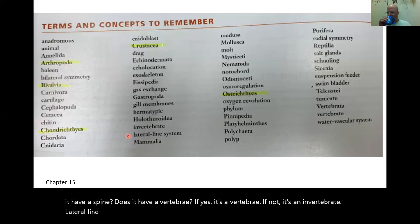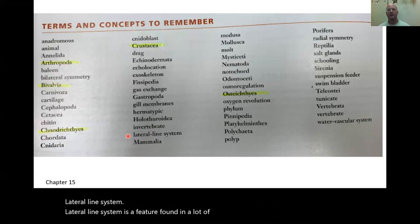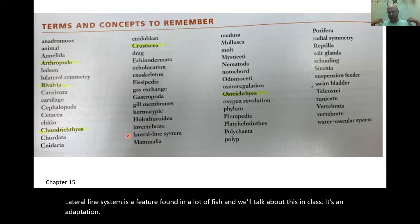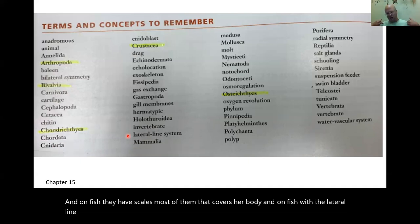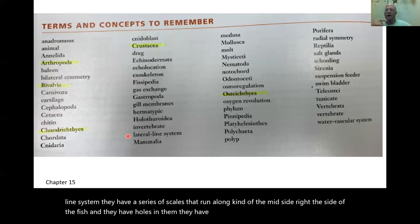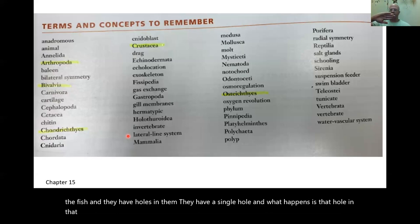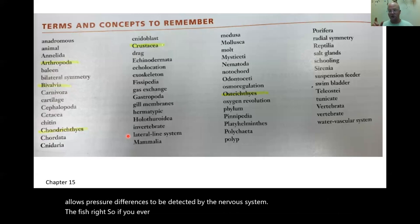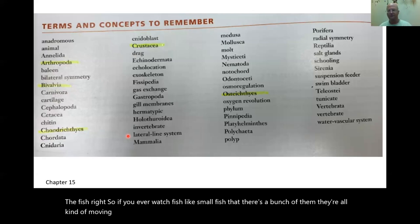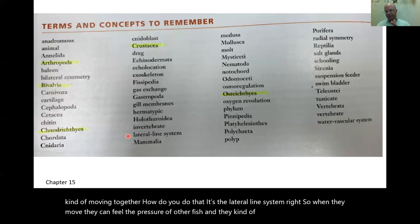Lateral line system is a feature found in many fish. On fish with the lateral line system, there's a series of scales running along the mid-side of the fish with holes in them. That hole allows pressure differences to be detected by the nervous system. If you watch small fish all moving together, it's the lateral line system — when they move, they can feel the pressure of other fish and know where to go.